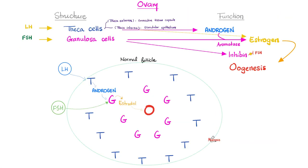The female ovary has theca cells on the outside; they make androgen in response to LH. The ovary also has granulosa cells, which respond to the follicle-stimulating hormone FSH, and convert that androgen into estrogen, namely estradiol, because we're talking about the ovary.